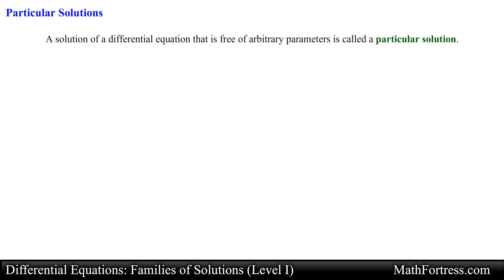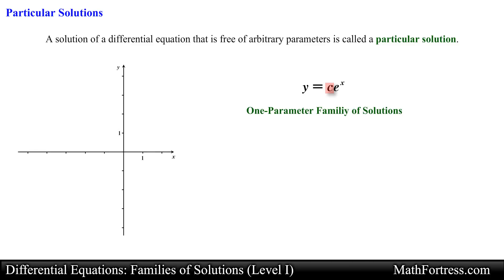Now let's talk about the various types of solutions that exist when solving ODEs. A solution of a differential equation that is free of arbitrary parameters is called a particular solution. For example, if we were to take the one-parameter family of solutions y equals c times e to the x and assign values to the parameter c, we would obtain the following solution curves. If the parameter c equals 0, we would obtain a graph representing the trivial solution y equals 0 to the differential equation y prime minus y equals 0.